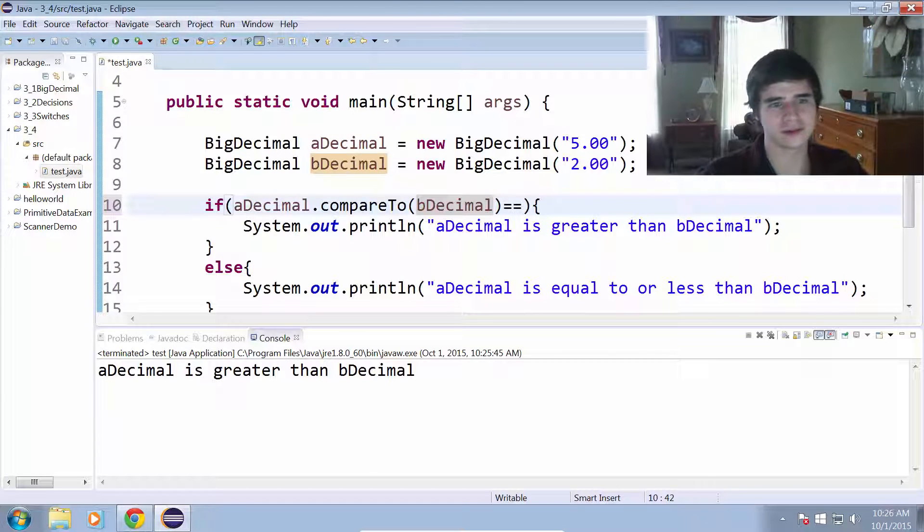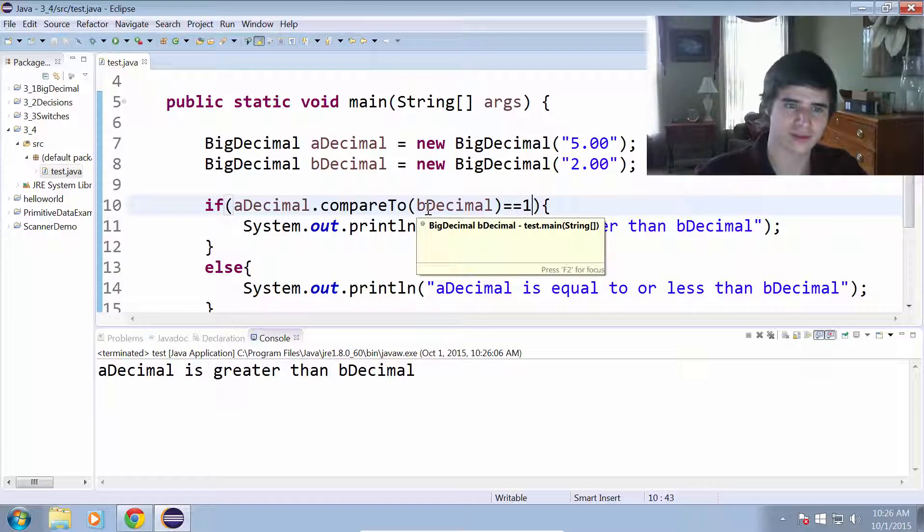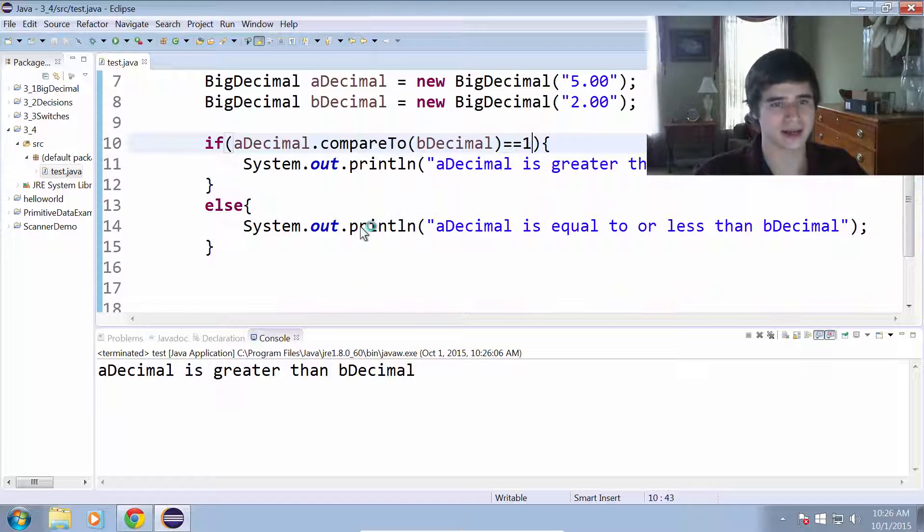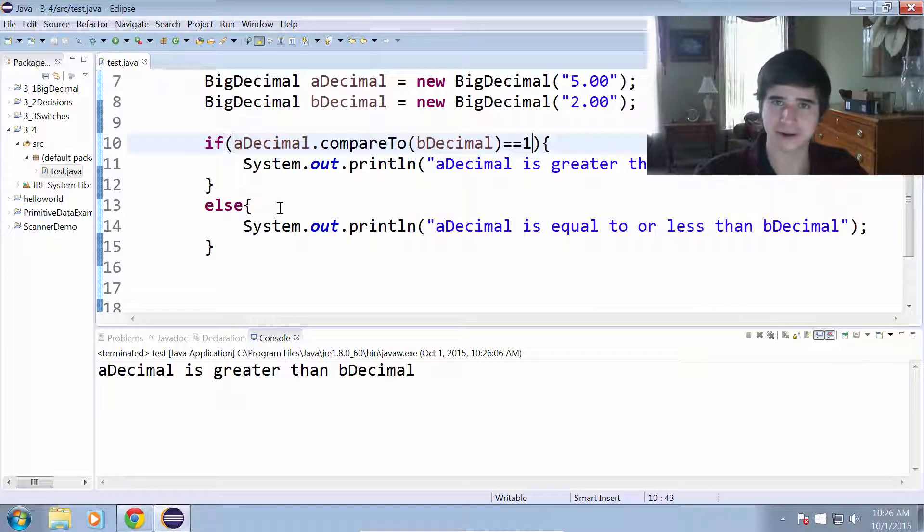We could also do equals to one, and we'll get the same exact result, because like I said, the compareTo method for BigDecimals returns negative one, zero, or positive one. So that is, in essence, the compareTo method.